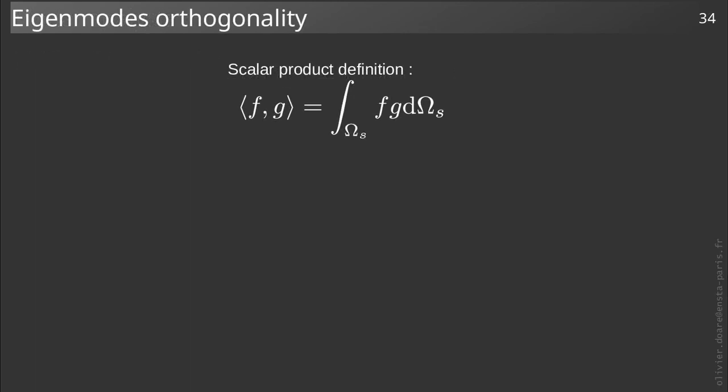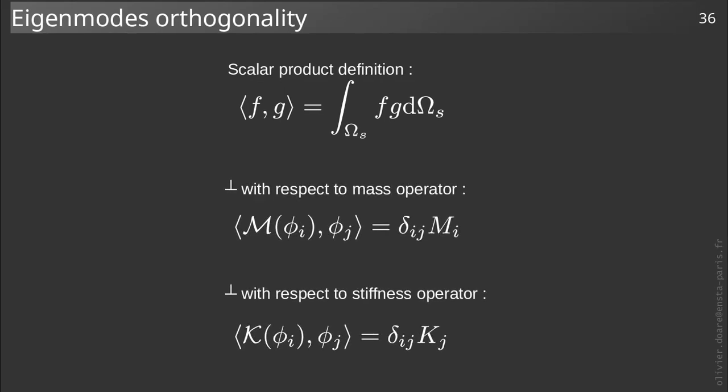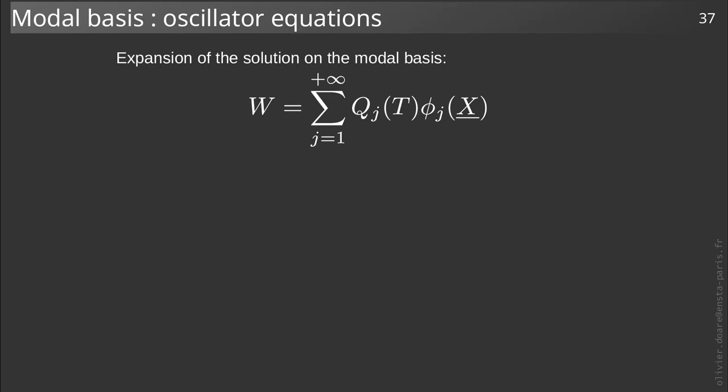After having defined a scalar product between two functions defined on the solid problem as the integral over the domain of the product of these two functions, we know that the eigenfunctions, also called eigenmodes, are orthogonal with respect to the stiffness and mass operators. As a consequence, the solution of the problem is expressed as the sum of eigenmodes, the coefficient of the decomposition being noted q and depending on time.